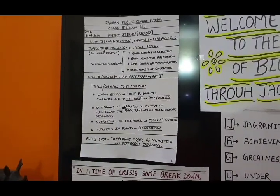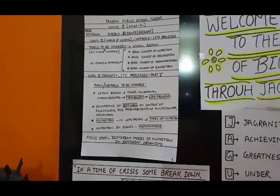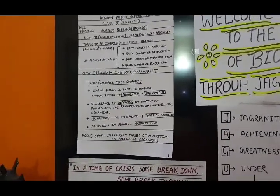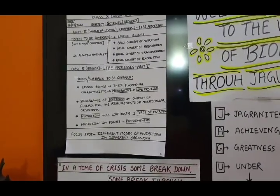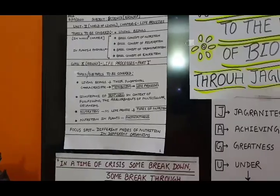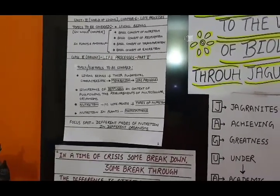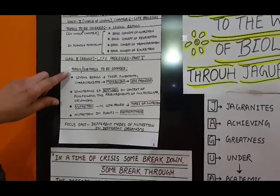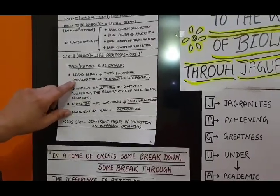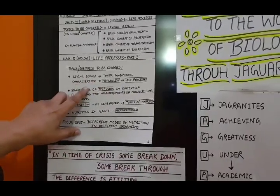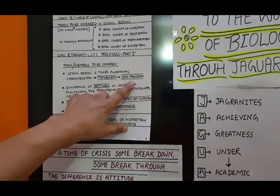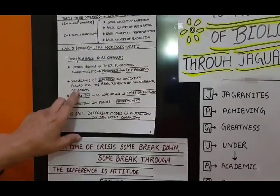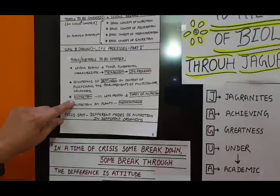In this chapter, topics to be covered are Living Beings, Basic Concept of Nutrition, Basic Concept of Respiration, Basic Concept of Transpiration, and Basic Concept of Excretion. In the first session of this chapter, I will cover mainly Living Beings and their Fundamental Characteristics, Metabolism or Life Processes, and the Significance of Diffusion in Context of Fulfilling the Requirements of Multicellular Organisms.